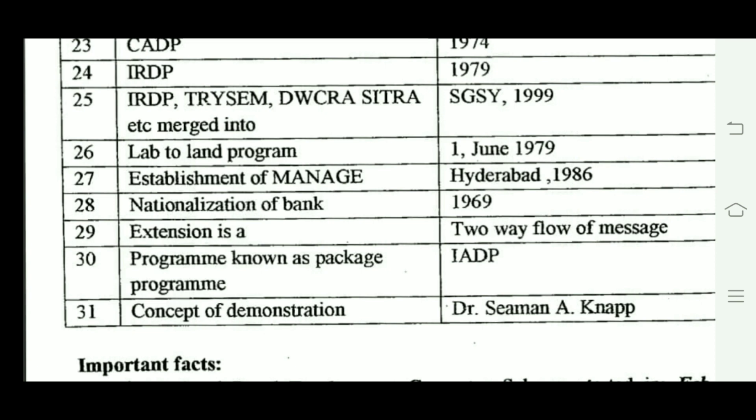Extension is the two-way flow of message. The IADP Package Program introduced the concept of demonstration. There are two important committees: the Balvantrai Mehta Committee, which proposed a three-tier system in 1957, and the Ashok Mehta Committee, which proposed a two-tier system.